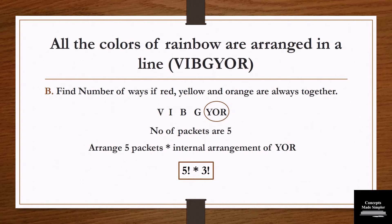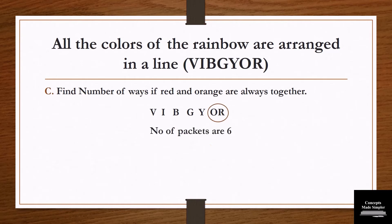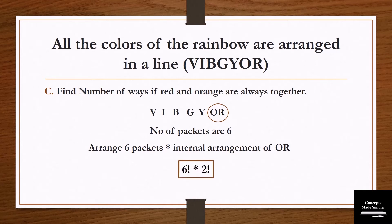I hope I've made my point clear. If not, please pause and rewind. The next question is: find the number of ways if red and orange are always together. The solution: keep orange and red together and tie with a string — number of packets is 6. So the solution is: arrange 6 packets and multiply by the internal arrangement of O and R, giving 6 factorial into 2 factorial.